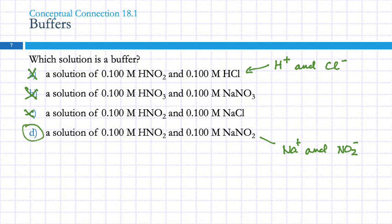The amounts shown here are equal — but is that important? The amount is important, but here they took that out of the question, so it's not a factor. You do need roughly equal amounts — you need significant amounts. So if we had 0.1 molar HNO2 and 0.001 molar nitrite, that probably would not be an effective buffer. But we'll learn more details about that.